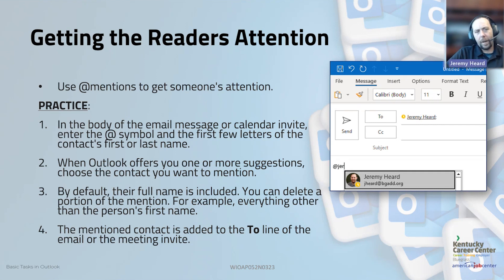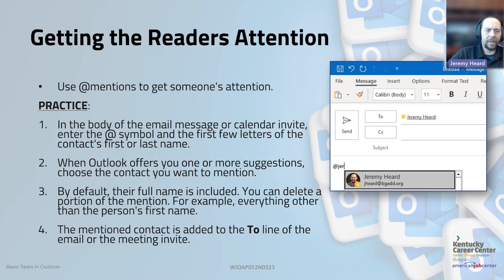One of the newer features in Outlook is mentions. Within the body of the email you can actually mention someone by typing the at symbol followed by the first few letters of their name, and Outlook will automatically give you suggestions of contacts within your organization. Once you select the one you want, it will add that user to the To line of the email and also bold their name within the body so that it stands out.